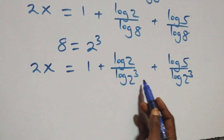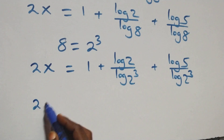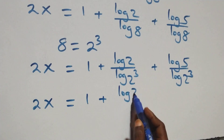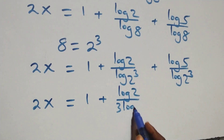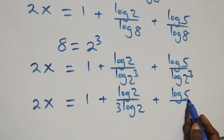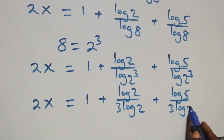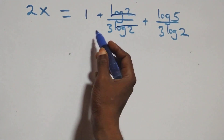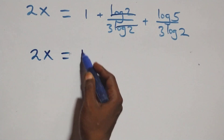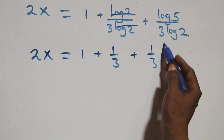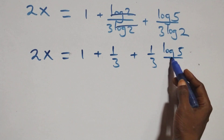Here we apply the power rule of logarithms — the exponent comes down. We have 2x equals 1 plus log 2 over 3 log 2, plus log 5 over 3 log 2. In the next step, log 2 cancels with log 2, so 2x equals 1 plus 1 over 3, plus 1 over 3 times log 5 over log 2.